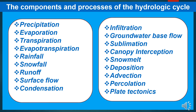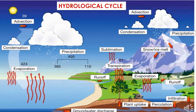Now to study the components and processes of the hydrological cycle. The components are: precipitation, evaporation, transpiration, evapotranspiration, rainfall, snowfall, runoff, surface flow, condensation, infiltration, groundwater base flow, sublimation, canopy interception, snow melt, deposition, advection, percolation, and plate tectonics. We will study about each and every one in our next slides. Here we have shown the diagram of the hydrological cycle and how the components are playing an important role.